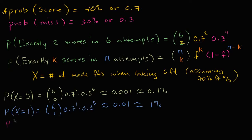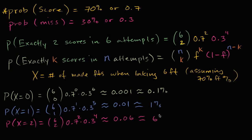The probability that x is equal to two — this is what our first video was essentially about. This is going to be six choose two, times 0.7 squared, times 0.3 to the fourth power. This is approximately 0.06, or six percent. You could type these into a calculator for a more precise answer, but rounding to the nearest tenth of a percent gives us 6.0%, and the previous case was 1.0%.